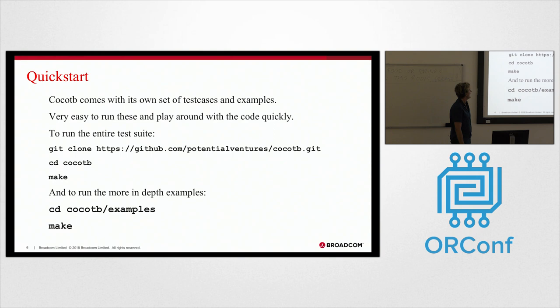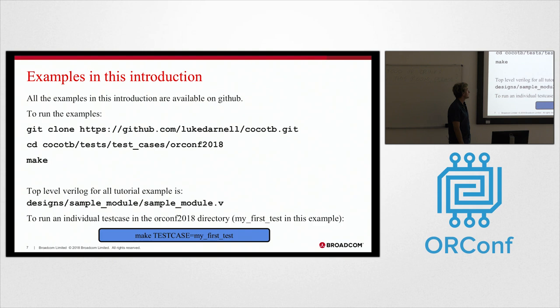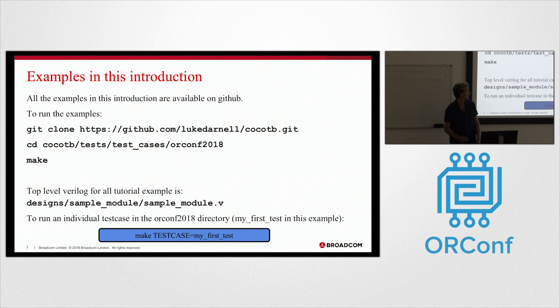So CocoTB itself comes with a bunch of examples here. The default simulator it runs against is Icarus. There's more in-depth examples as well. My own examples that I have in this presentation are available on my own GitHub. This little blue thing here is how you run the test case with the code in each slide.